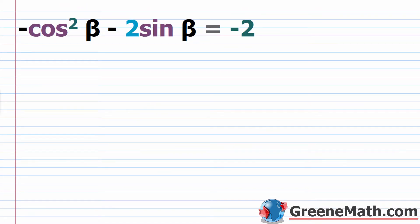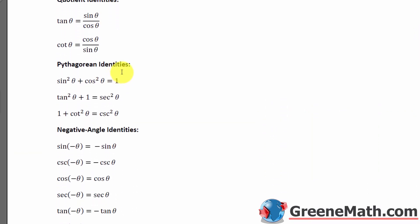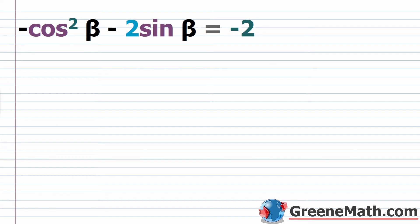Now let's look at an example that uses identities. We have negative cosine squared beta minus 2 times sine of beta equals negative 2. Notice we have both sine and cosine — specifically cosine squared — so we use the Pythagorean identity: cosine squared theta equals 1 minus sine squared theta.